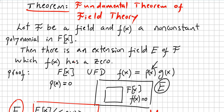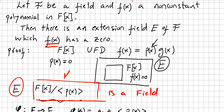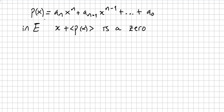Now we still have to prove that f(x) has a zero in this extension field. We already have the extension field, but we still need to show f(x) has a zero there. In order to show that p(x) has a zero, let p(x) = aₙxⁿ + aₙ₋₁xⁿ⁻¹ + … + a₀. In the extension field, x + ⟨p(x)⟩ is a zero of p(x).